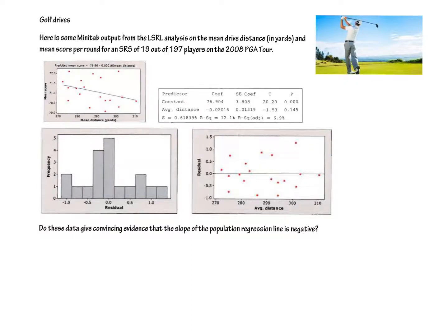Here is our question we need to be answering: Do these data give convincing evidence that the slope of the regression line is negative? So that means we need a H0 and Ha, and we need to reject or fail to reject that the slope of the regression line is negative. It looks like the slope is negative, but is it convincing enough?